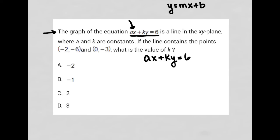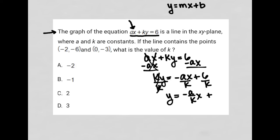To do that, I basically need to isolate Y. So to isolate Y, the very first thing I'm going to do is subtract AX from both sides of the equation, leaving me with KY equals negative AX plus 6. And then I'm going to divide by K, which isolates my Y, and I get Y is equal to negative A over K times X plus 6 over K.